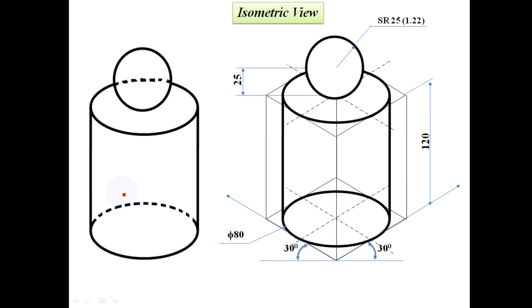That circle radius is 1.22 into true length — that is 1.22 into 25 radius. The other length uses true length. We draw the circle for the sphere. That completes the isometric view of the cylinder with sphere on top.